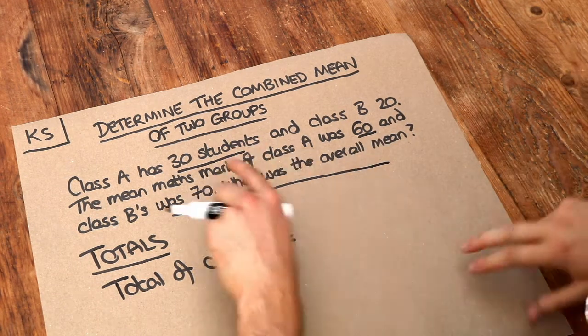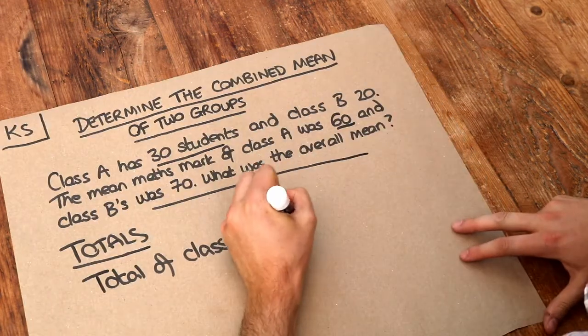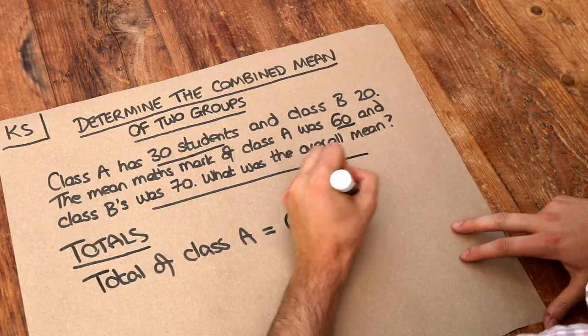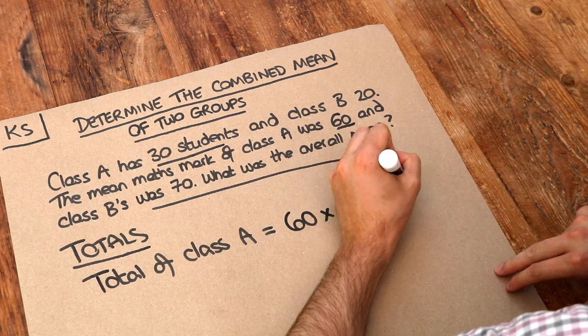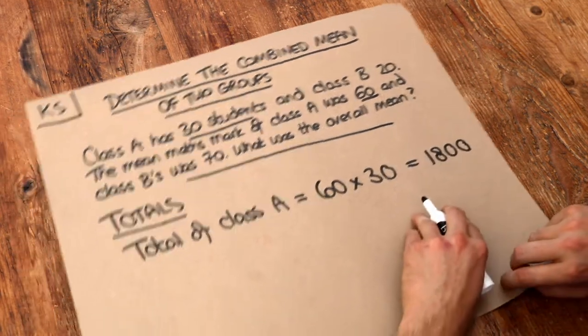Now we find the total mark by just doing that mean of 60 times by how many students there are. So we've got 60 times 30 and that is 1,800. So that was the total mark of all the people in class A.